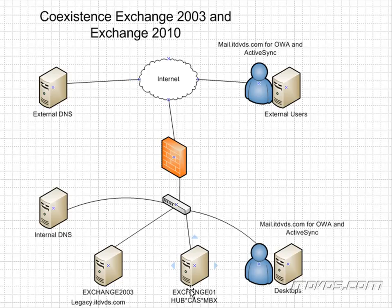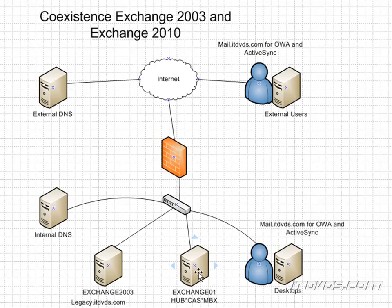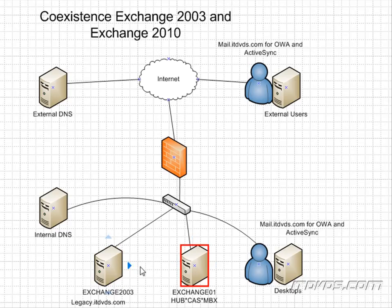In this diagram, Exchange 01 is going to be our Exchange 2010 server, and it's going to have the hub transport, client access, and mailbox roles on it. We may have some mailboxes on our Exchange 2003 server and some mailboxes on our Exchange 2010 server. There's going to be a routing group connector between our Exchange 2010 server and our Exchange 2003 server, so they'll be able to pass email back and forth.